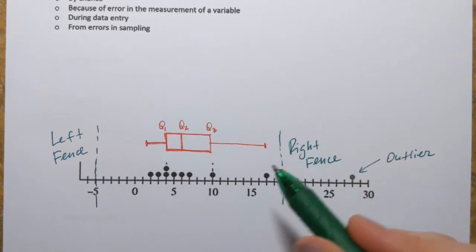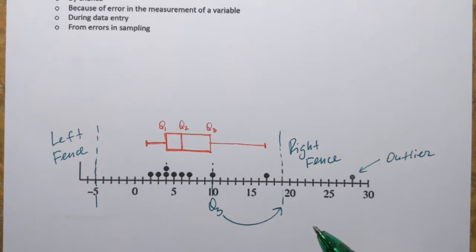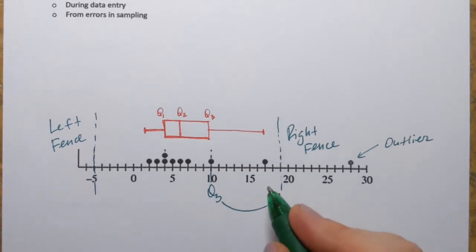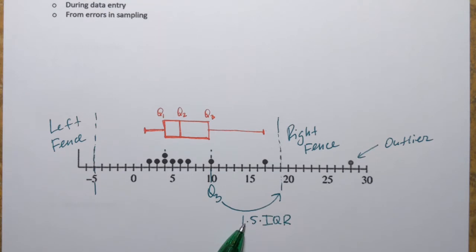What I do to determine the right fence? I start at Q3, so that's this value here. And I make step to the right. How far do I step? Well, that distance is always going to be 1.5 times IQR. Remember IQR? Interquartile range. It's this distance here, the distance of the box itself. So if I take that value, that distance, which is IQR, and multiply it by 1.5. And if I add that value to Q3, that's where I will have to build that fence.